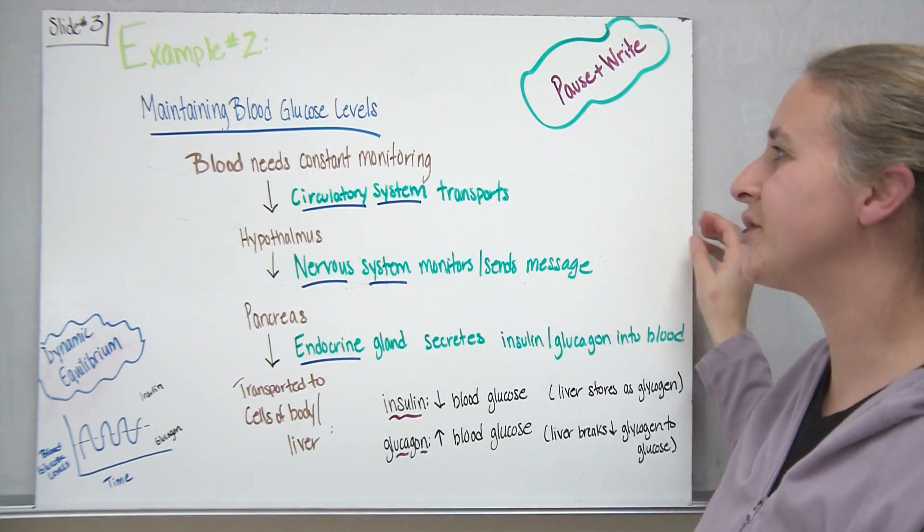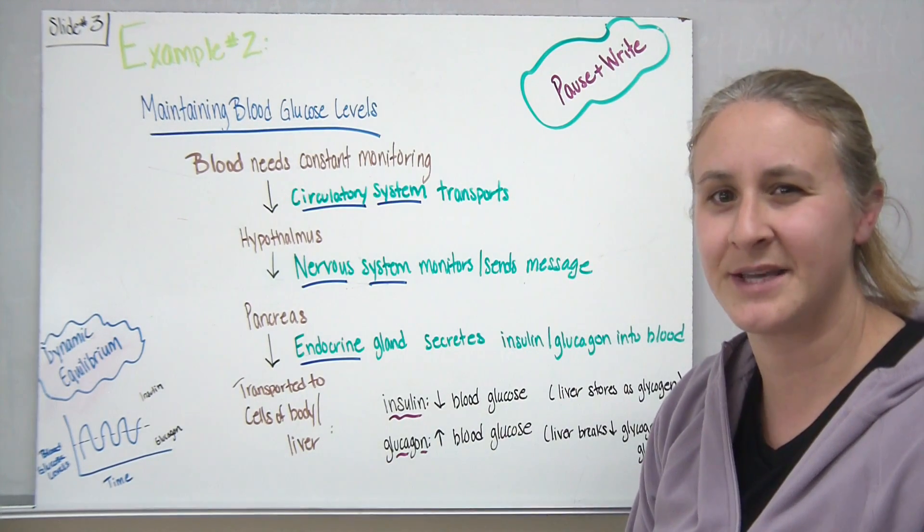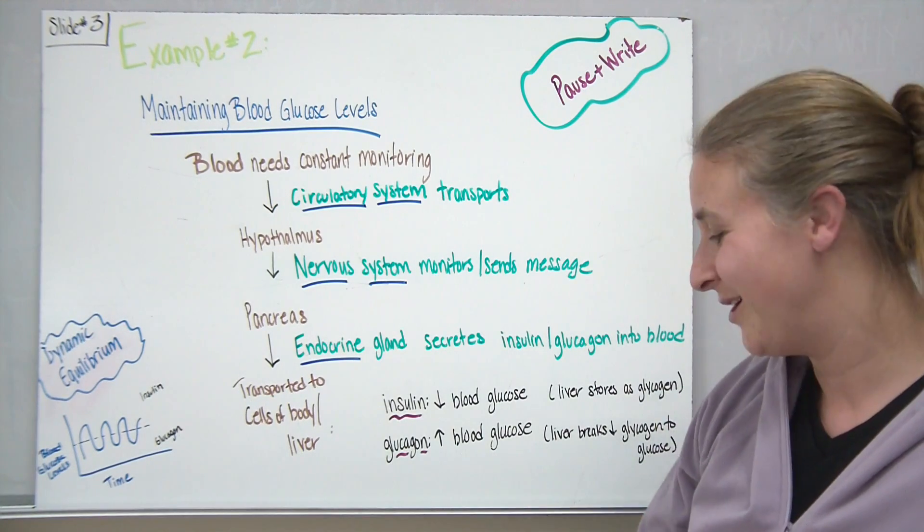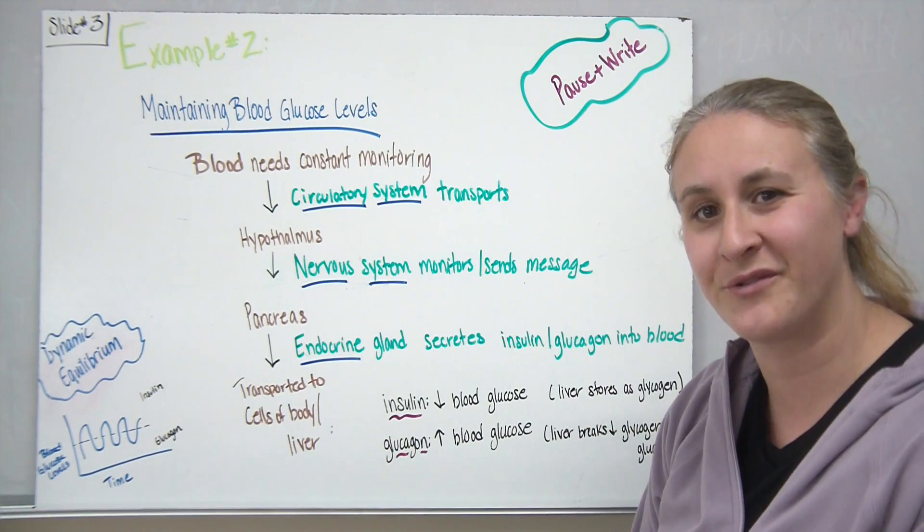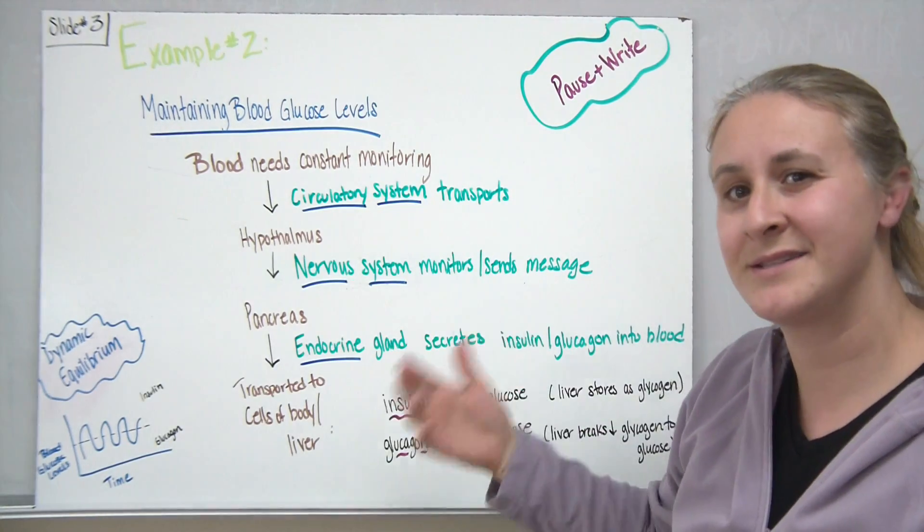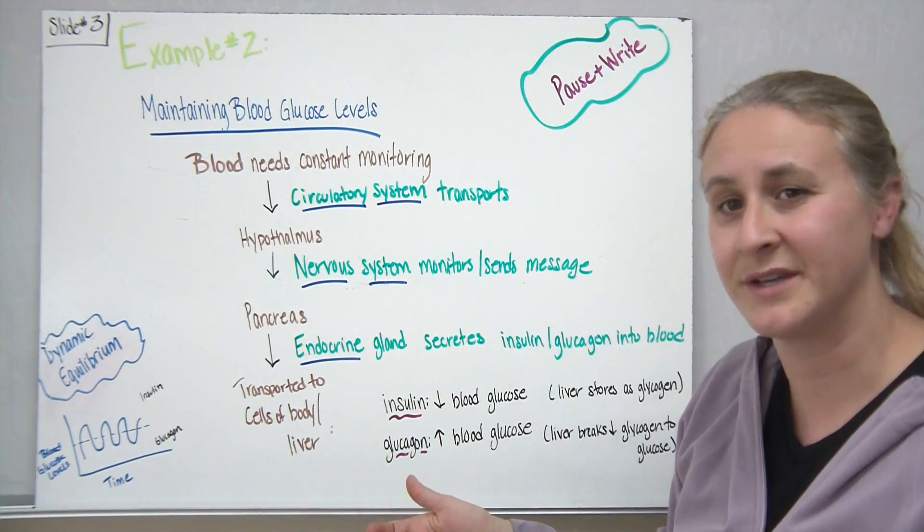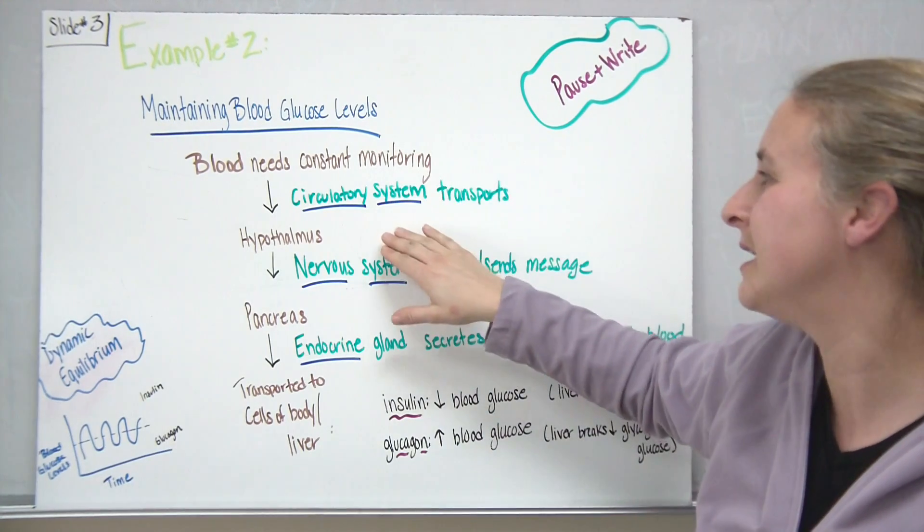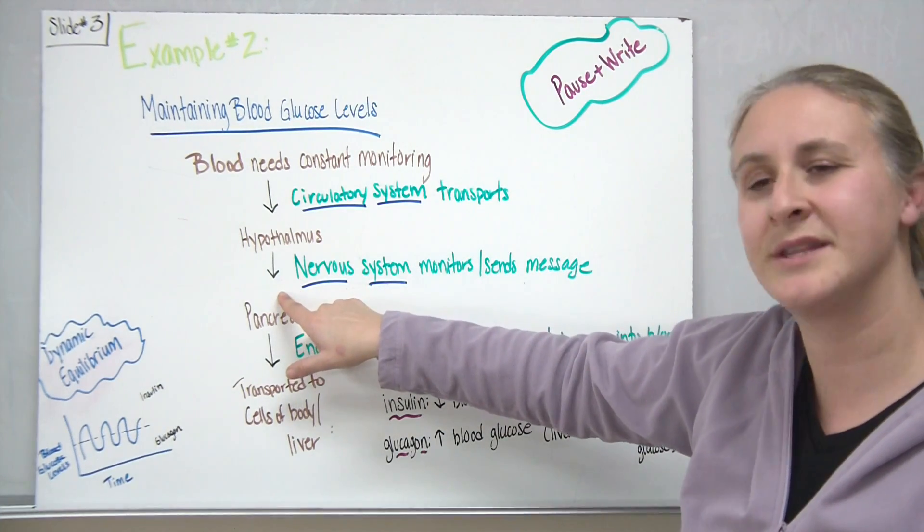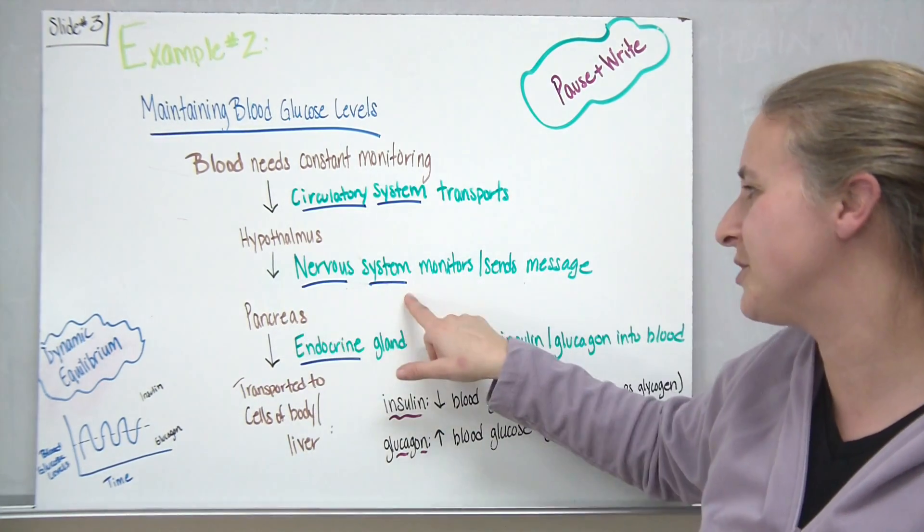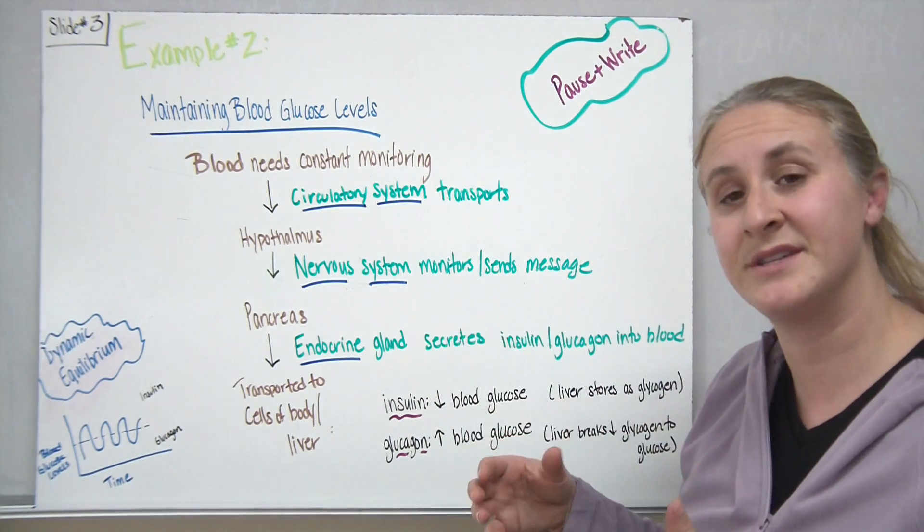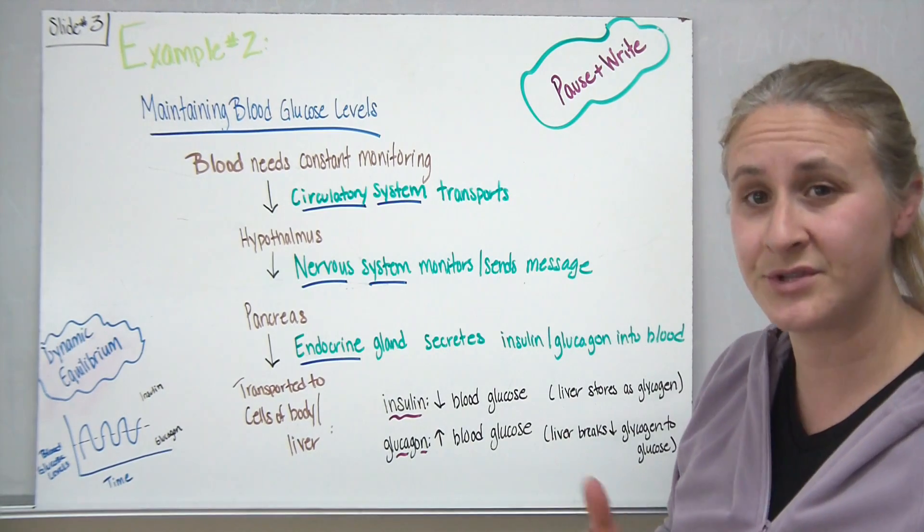Let's take a look at another example. So one other thing that our body does is help to maintain blood glucose levels. Remember glucose is the primary sugar that we use for energy which we just used in our example for cellular respiration. Our blood needs to have constant monitoring. So our body is constantly checking the levels of different things in our blood including the blood glucose levels. And we have our circulatory system that is transporting that blood around the body and it will transport it to the hypothalamus in your brain which is part of your nervous system. And it's going to monitor those levels of blood sugar and it will send messages to different parts of the body if the levels are too high or too low.